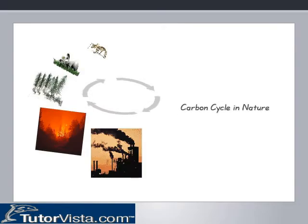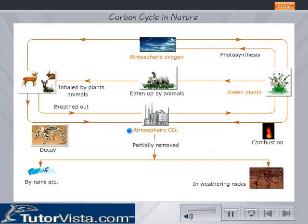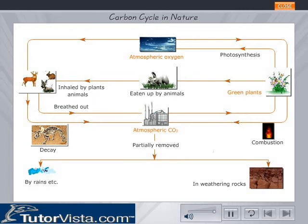Here is a schematic representation of the carbon cycle in nature. Carbon dioxide is constantly produced by combustion of fuels and by respiration of plants and animals. However, the amount of carbon dioxide in air does not increase.